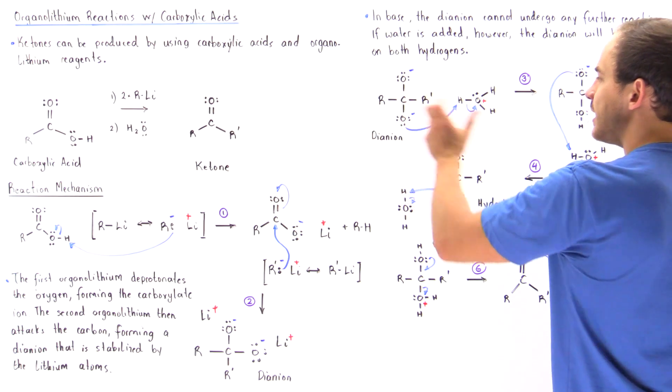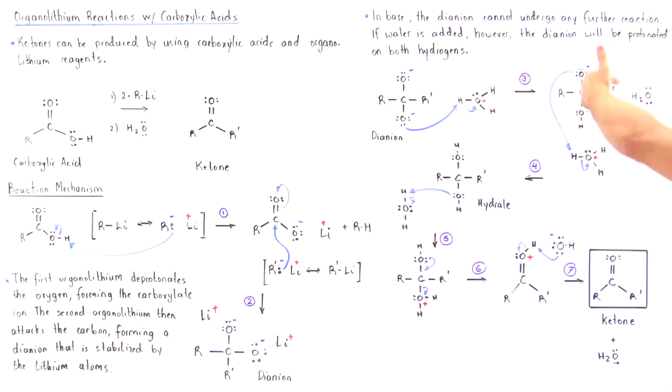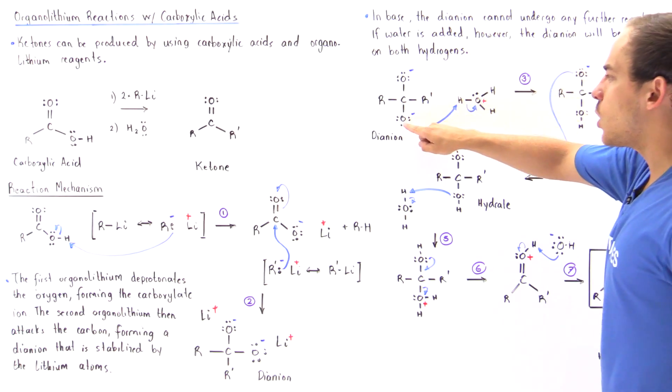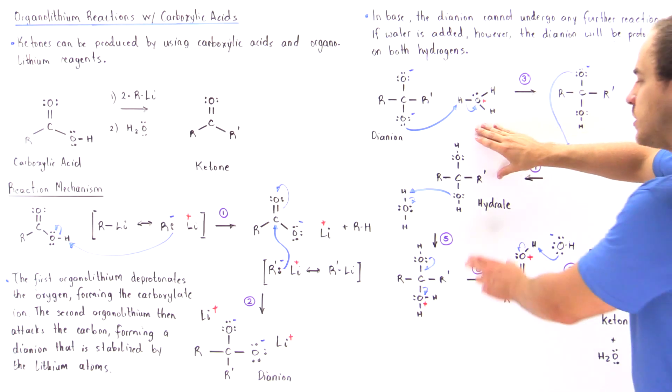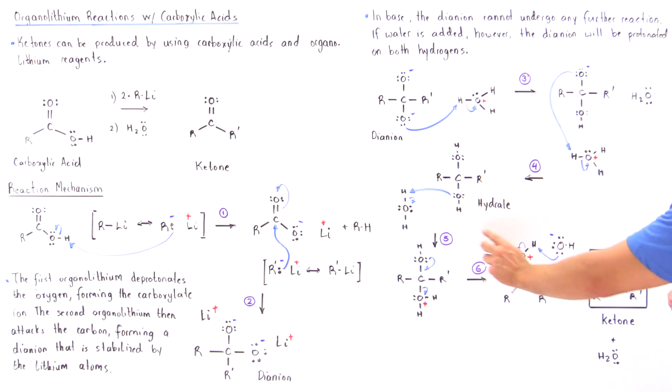Here we have the di-anion in steps three and four. The hydronium ion protonates each of the two oxygens, and we eventually produce a hydrate molecule.